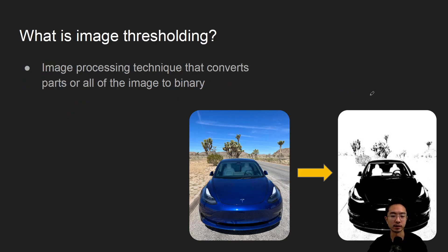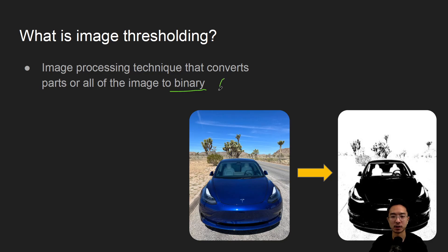So what is image thresholding? Image thresholding is an image processing technique, and it converts parts or all of the image into binary. Binary pretty much means black and white, so in our case it's going to be 0 or 255 — either of those two values.